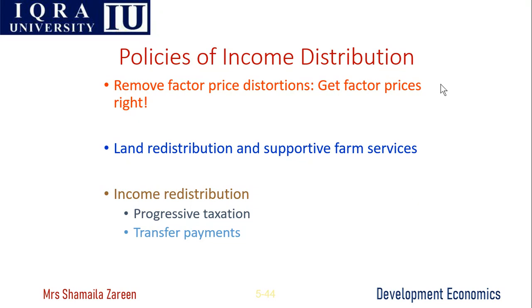This is the chapter of poverty and inequality. You can get many points about Pakistan from other sources as well, but the primary source is your book — Todaro and Smith. There are policies of income distribution covered in this chapter.